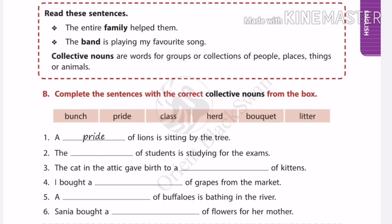In your textbook, page number 7, see the first sentence: The entire family helped them — here family is the group of members. Second sentence: The band is playing my favorite song — here band is the group of musicians. So these are the collective nouns here. Now see the exercise: complete the sentences with the correct collective nouns from the box. Children, try to do this activity by yourself, and the answer keys will be given in the next class.